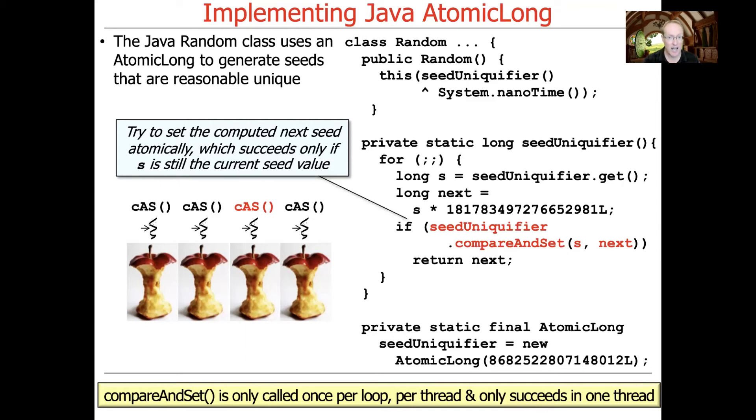That's the whole point of calling seedUniquifier compareAndSet S comma next. So only one of those threads will actually make the change atomically to give it the unique value that we use to XOR with nanoTime.